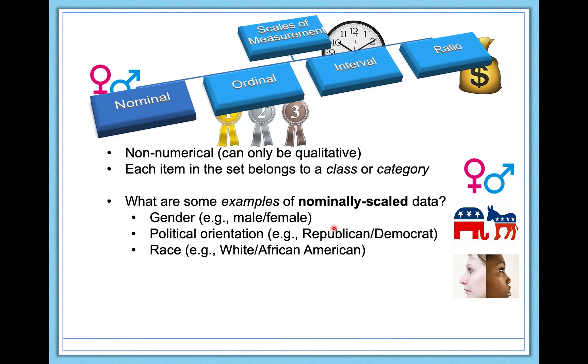We can look at political orientation. You can be Republican or Democrat, libertarian, independent, modern Whig, whatever floats your boat. In each of these cases we're looking at non-numerical data. Republican is not a number. And each item in the set belongs to a category. You're either Republican or you're Democrat, and there's not really any overlap there. So this is nominally scaled data.